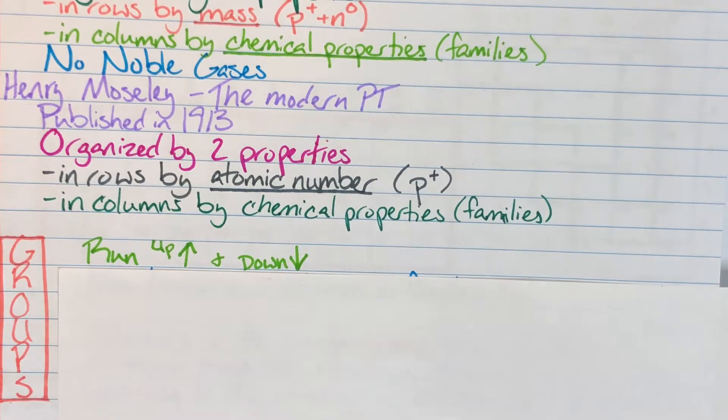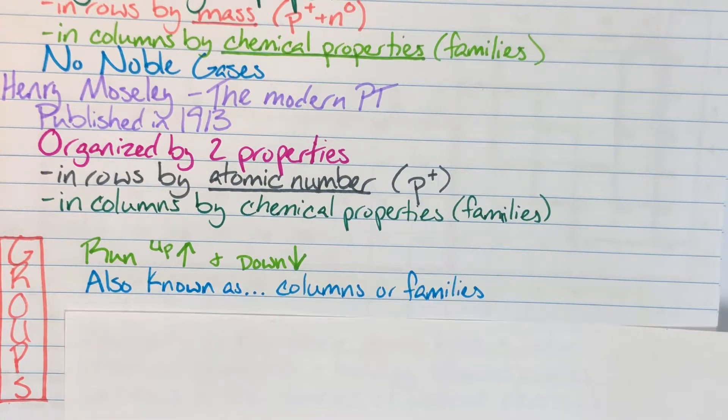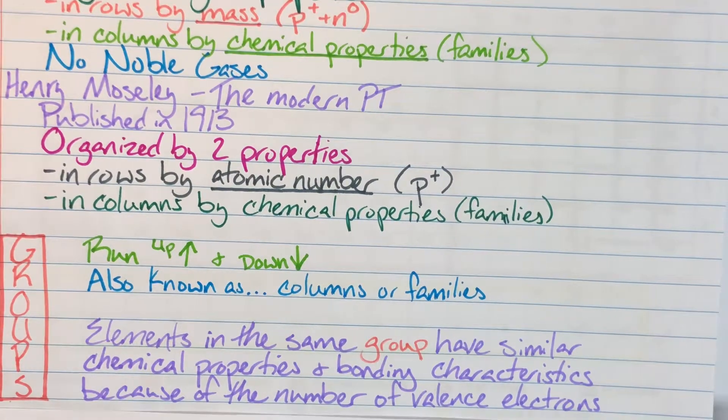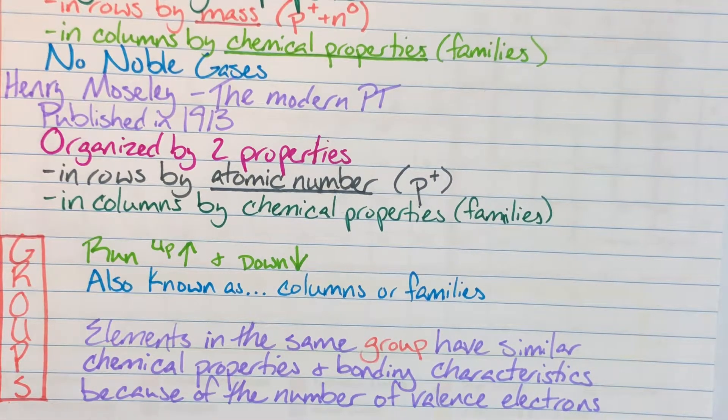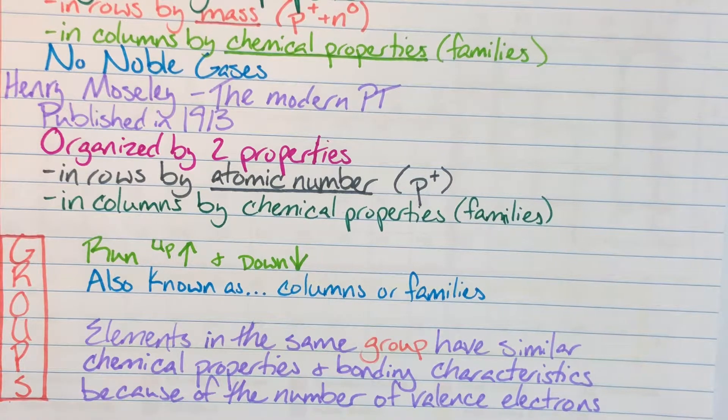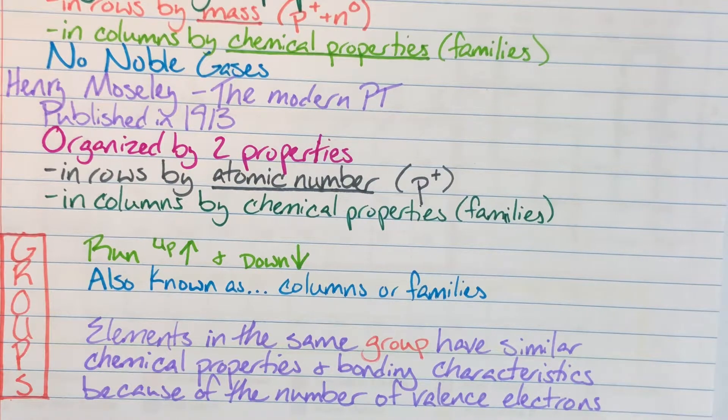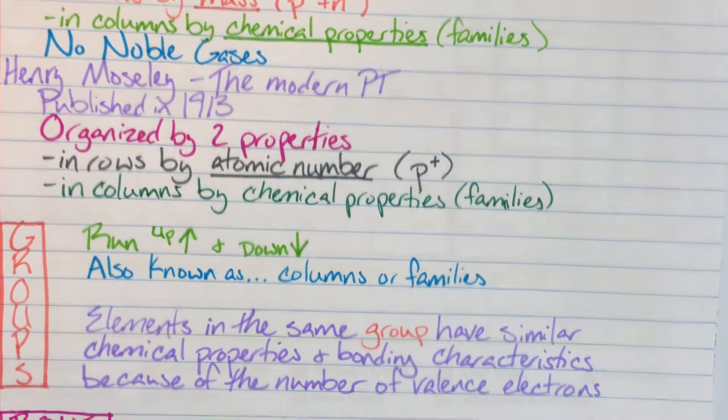We have lots of different names for the columns on the Periodic Table: columns, families, groups. And for my columns, all of the elements inside of them have very similar chemical characteristics and bonding patterns. The reason they have this is because they have the same number of valence electrons which is essential for bonding. It's the only thing that allows us to actually form bonds.